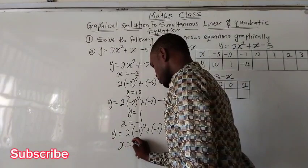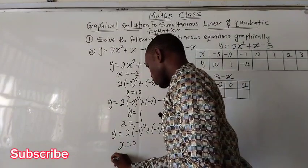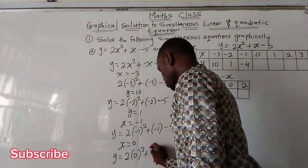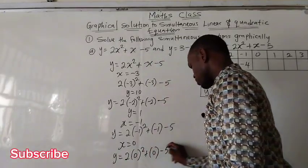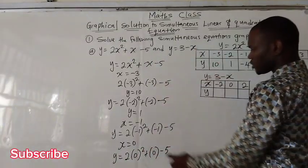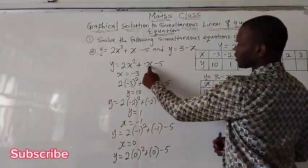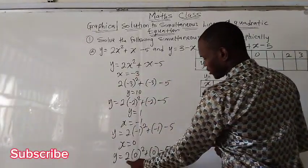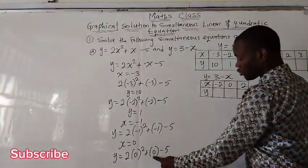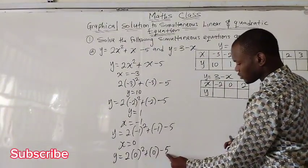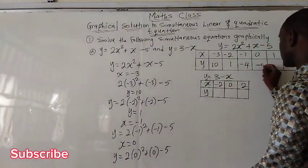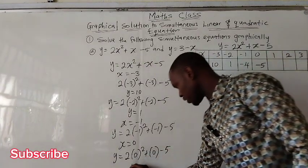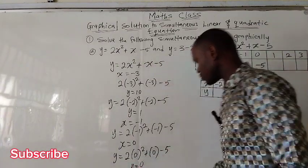When x is 0, we have 2 times 0 squared plus 0 minus 5. We substitute 0 for x everywhere. 0 squared is 0 times 2 is 0, plus 0 minus 5 gives us negative 5. So y is negative 5.